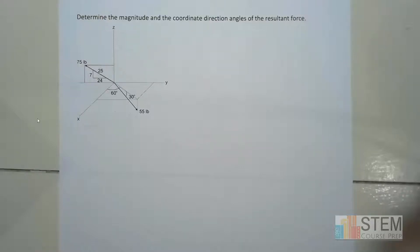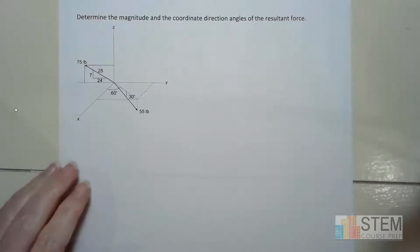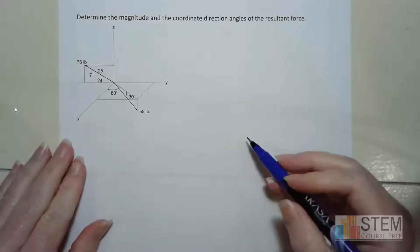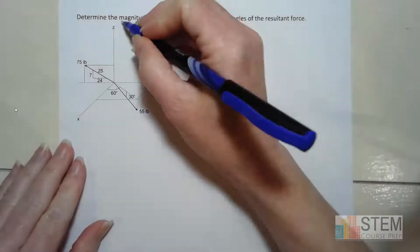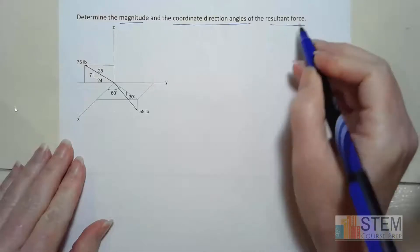Hey y'all, what's going on? So I've noticed that some of the students I've got are having issues with these transverse and azimuth angles, so I thought we would do an example over that today. In this problem, we're going to find the magnitude and the coordinate direction angles of our resultant force.